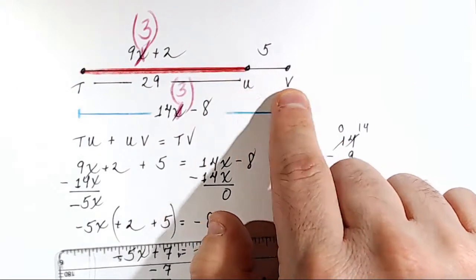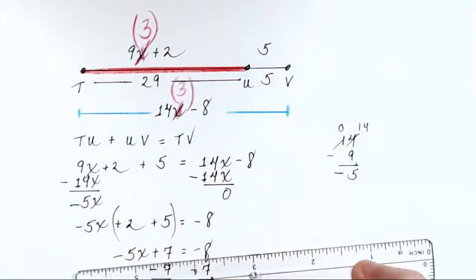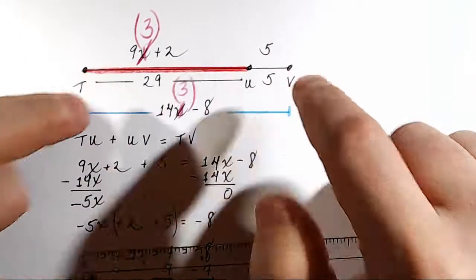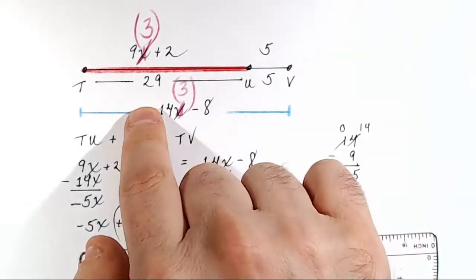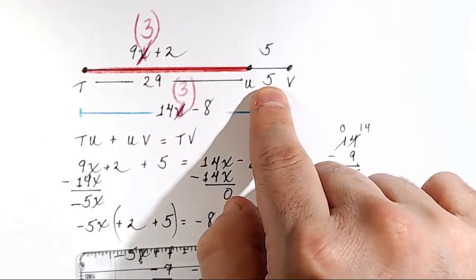So the conjecture here is that this whole distance right here from T to U is 29. We already know the distance from U to V is 5. That's what we were given. So we'll put a 5 there. So what do we think the total distance from T to V is? 29 plus 5. Segment addition postulate. 29 plus 5 is 34.